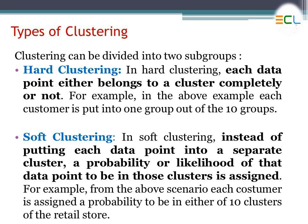In soft clustering, instead of putting each data point into a separate cluster, a probability or likelihood of that data point belonging to a cluster is assigned. From the previous example, each customer is assigned a probability to be in either of the ten clusters of the retail store — that is called soft clustering.